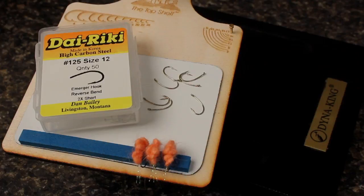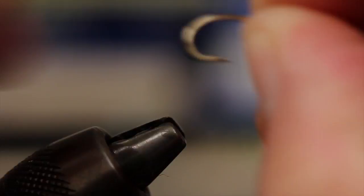A Dairiki number 125 in size 12 or 14 is my choice of hook for Sucker Spawn intended for trout. I begin by mashing the barb. Just because I'm not a purist doesn't mean I'm a barbarian.